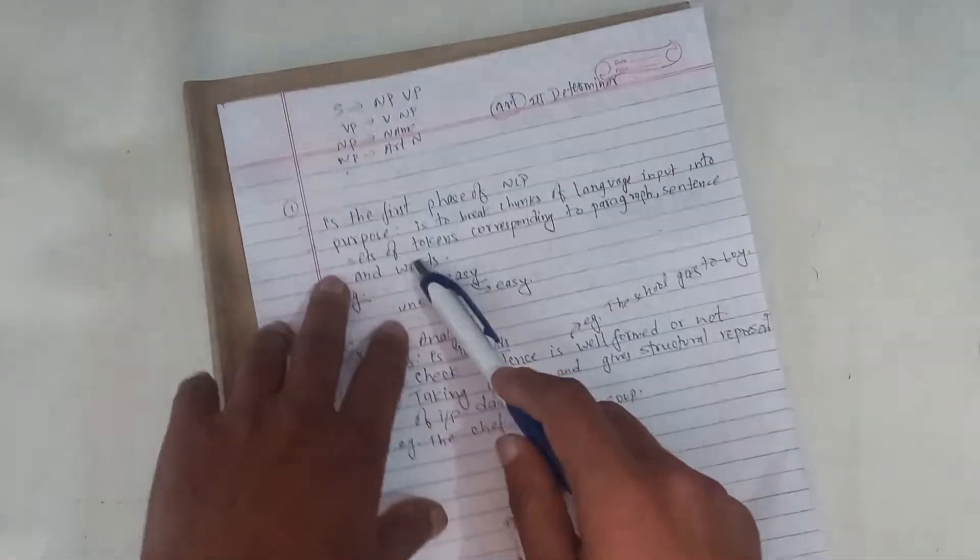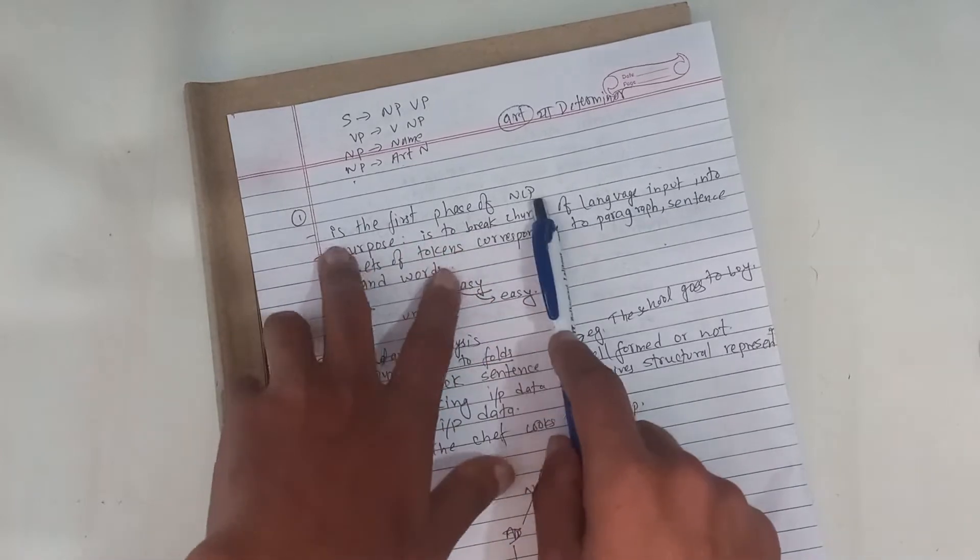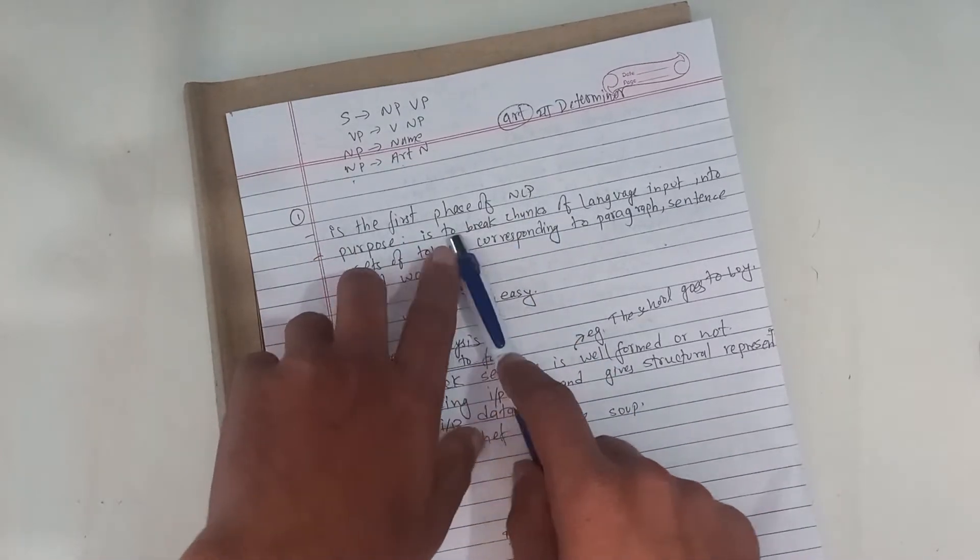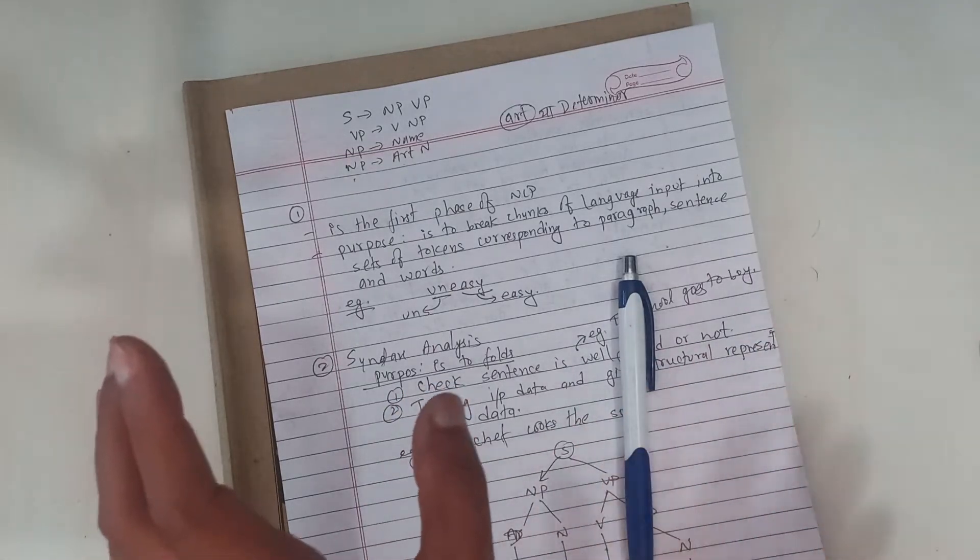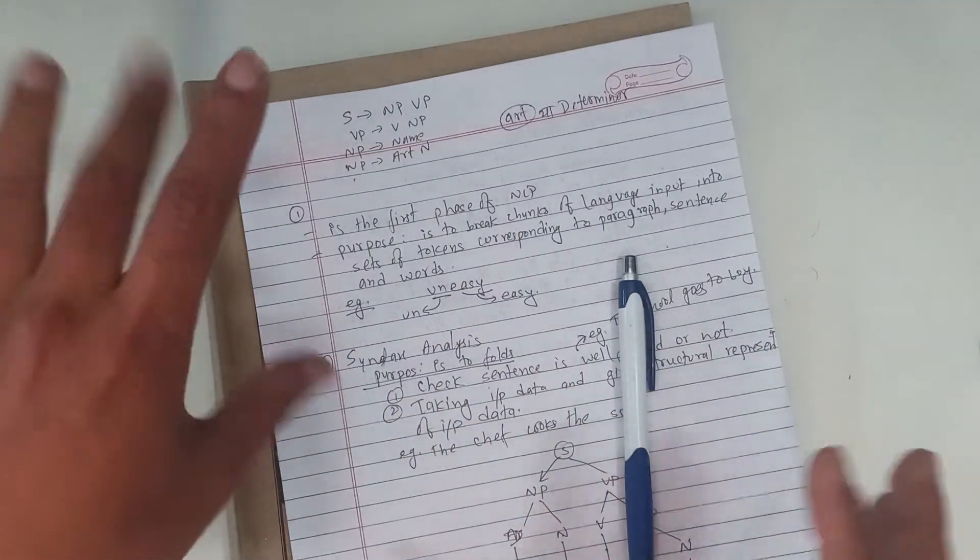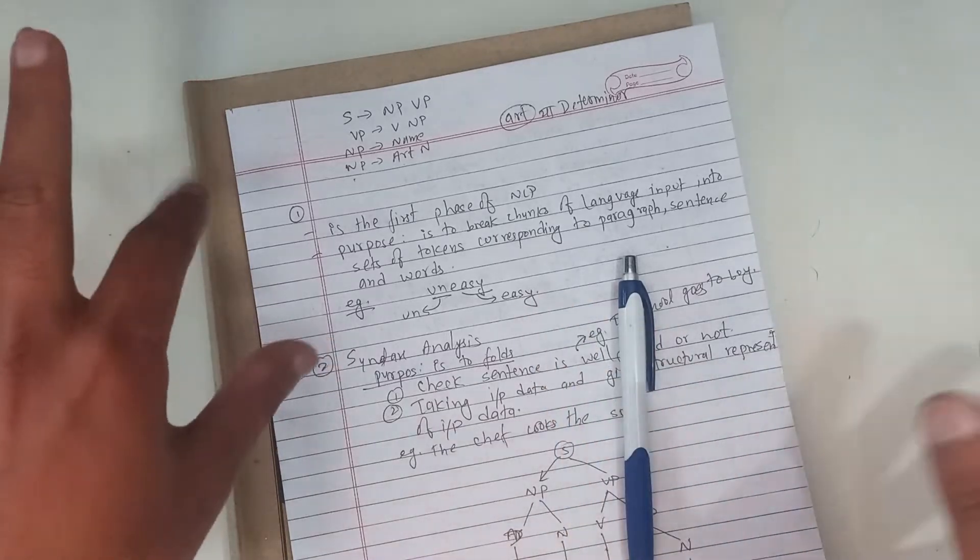In the beginning, morphological analysis. Morphological analysis is the first phase of natural language processing. The purpose is to break chunks of language input into sets of tokens corresponding to paragraphs, sentences, and words.